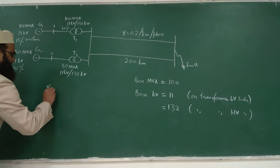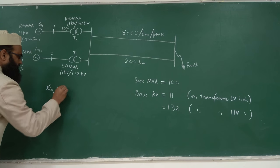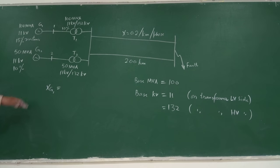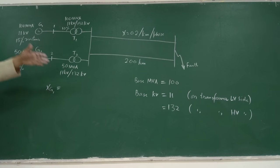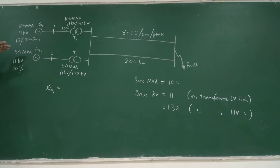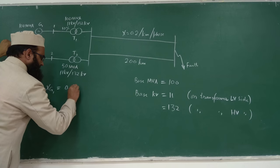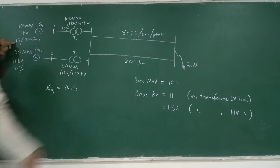Starting with generator G1: X_G1 in per unit. Since the generator's own MVA is 100 MVA and KV is 11 KV — both matching our base values — X_G1 = 0.15 per unit (15% reactance directly converts since base matches).